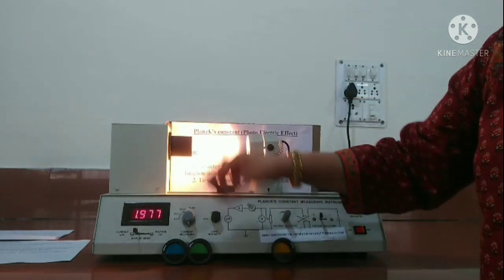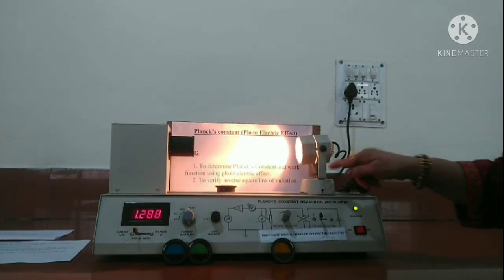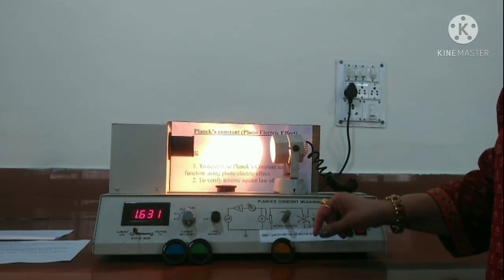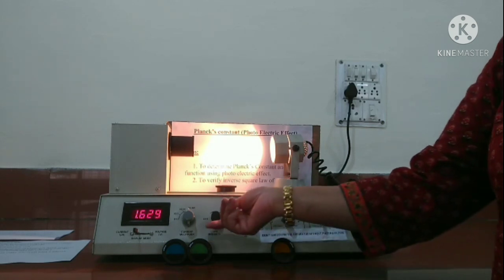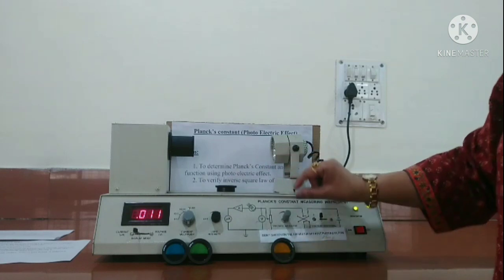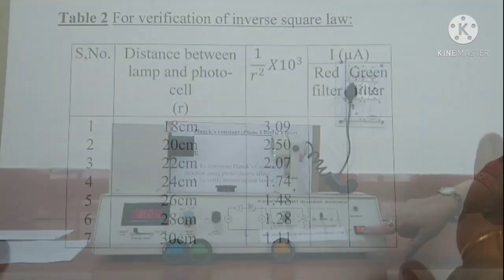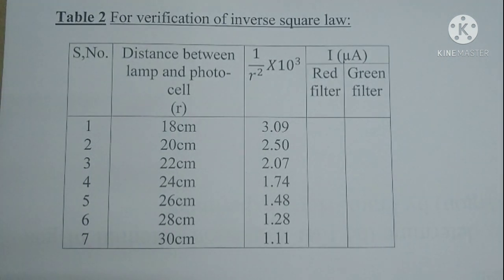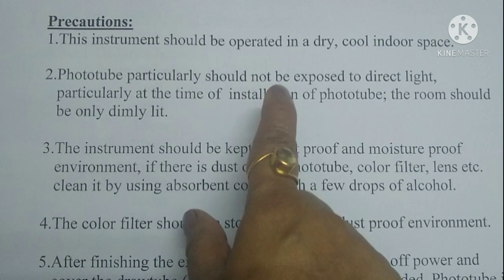We take four or five readings at different distances, keeping voltage constant, and note the current each time. This procedure is repeated for a different filter, and can be done for at least two filters. When switching off the device, first put the light source to zero, then reduce the voltage adjusting knob to minimum or zero, and then switch off. The observation table records current at various distances for each filter, and a graph of I versus 1/r² is plotted, which should be a straight line verifying the inverse square law.